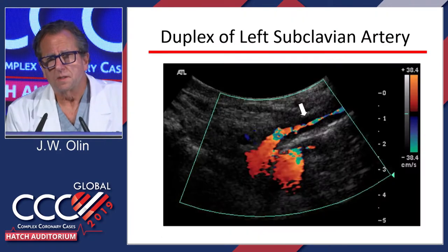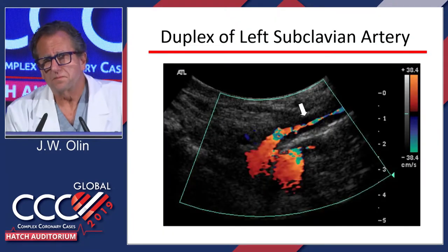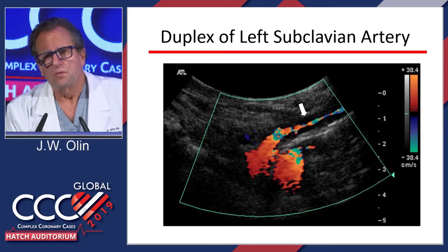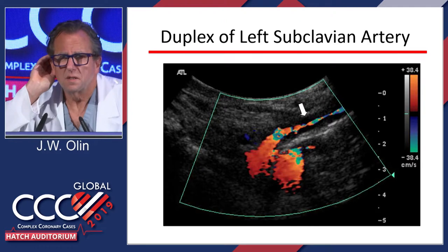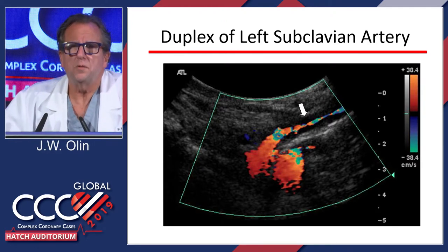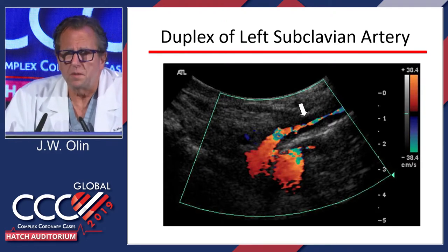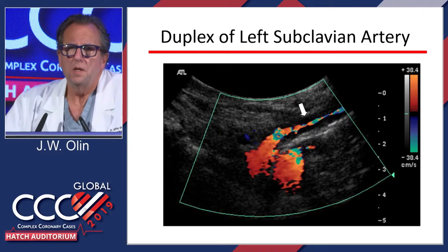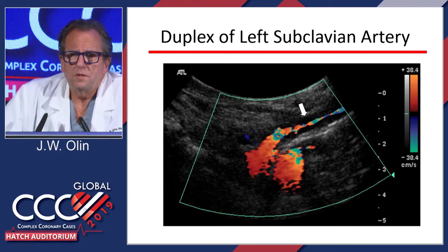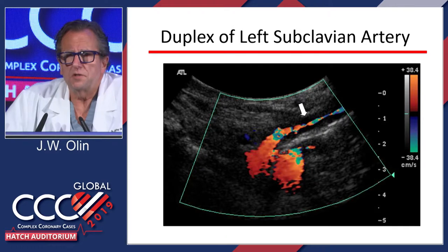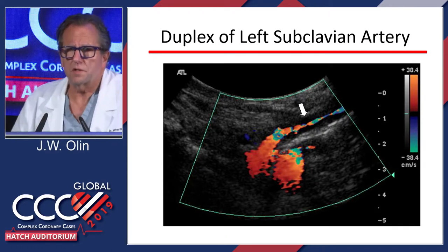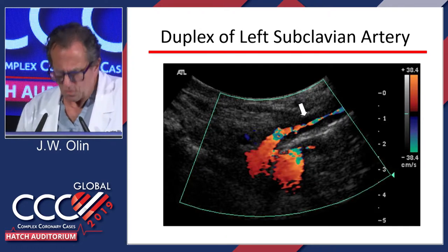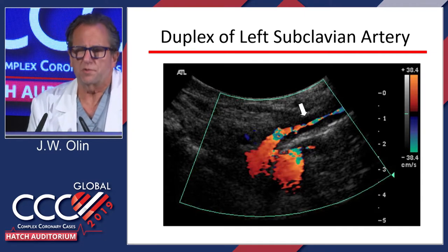She had no radial pulse. She actually had critical limb ischemia of her right hand and needed a carotid-brachial bypass. Most people with occluded subclavians don't have rest pain — they have normal oxygen saturation but lower blood pressure in that arm. Her blood pressure in her arms was about 70.